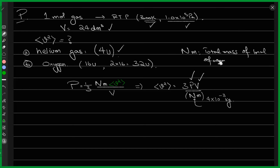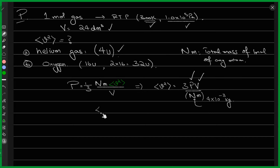For helium, Nm = 4 × 10⁻³ kilograms because the atomic mass is 4u. The atomic mass unit u, when expressed as the total molar mass in kilograms, gives 1 × 10⁻³ per unit, so four times that is 4 × 10⁻³ kg. That's where this value comes from, and the next step is to substitute the values.